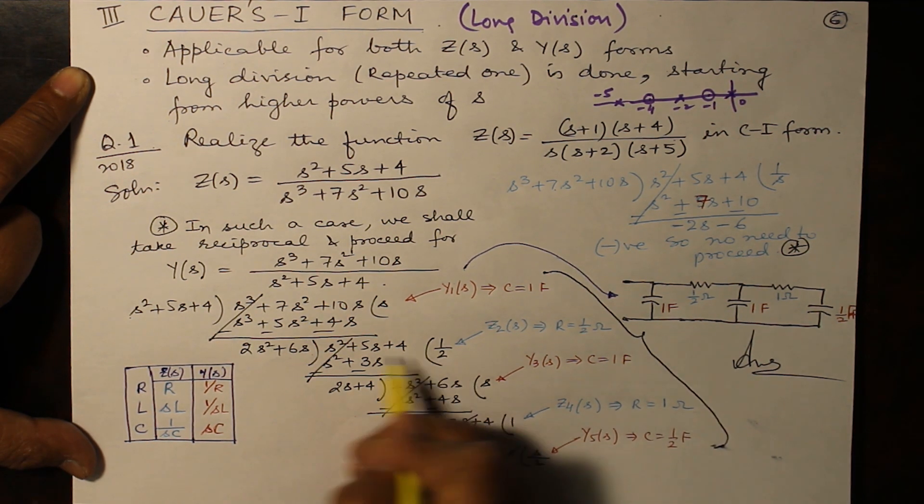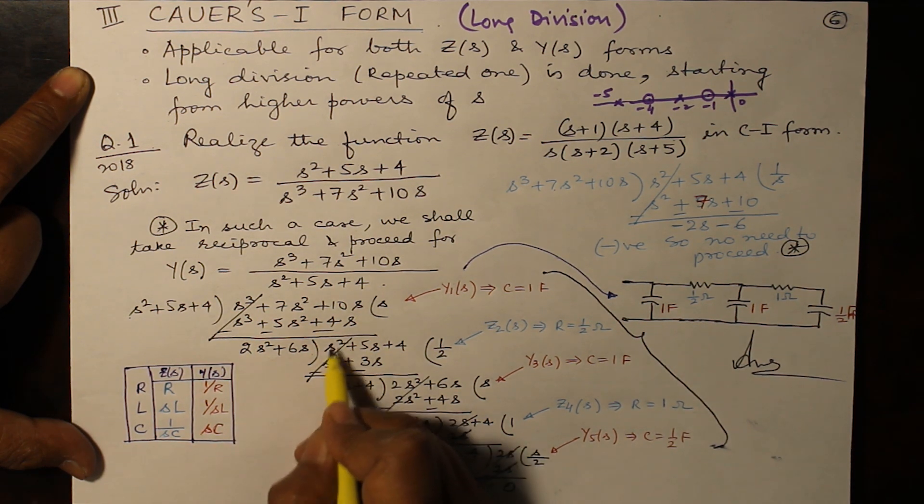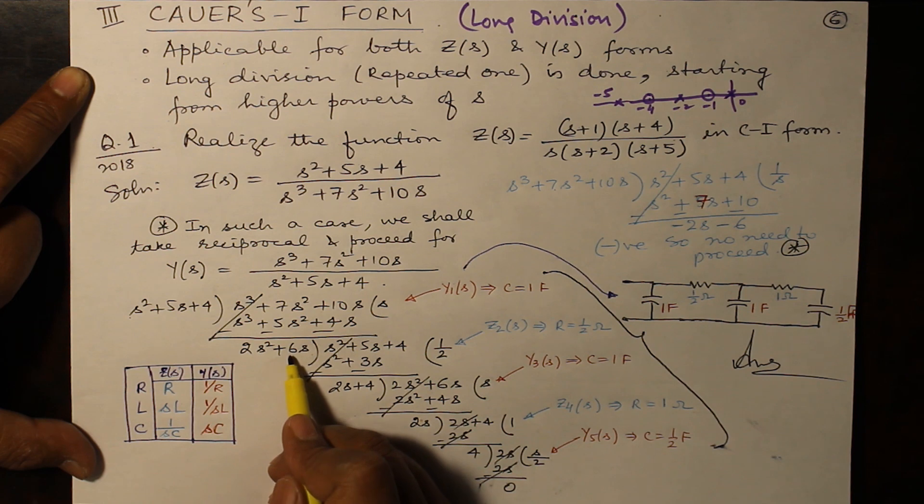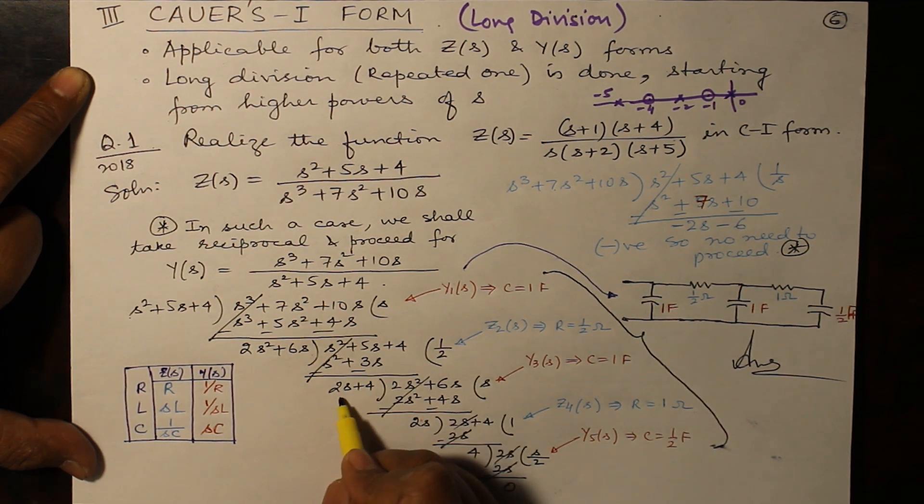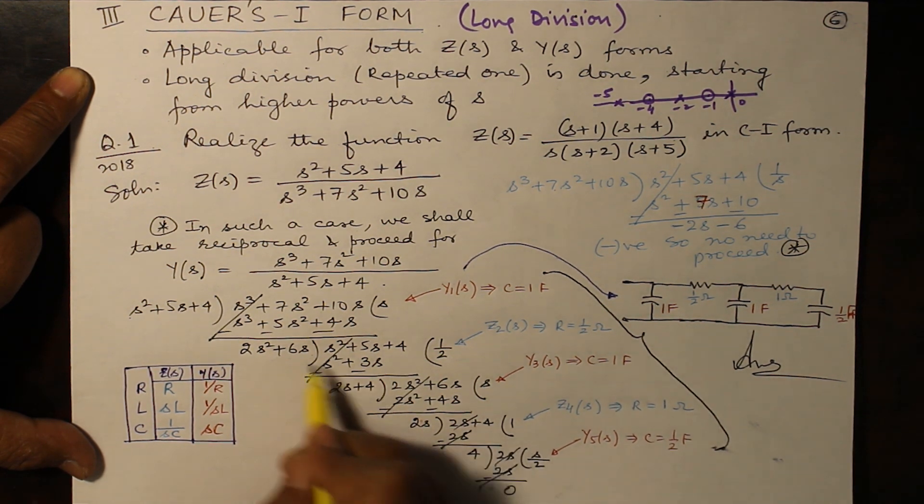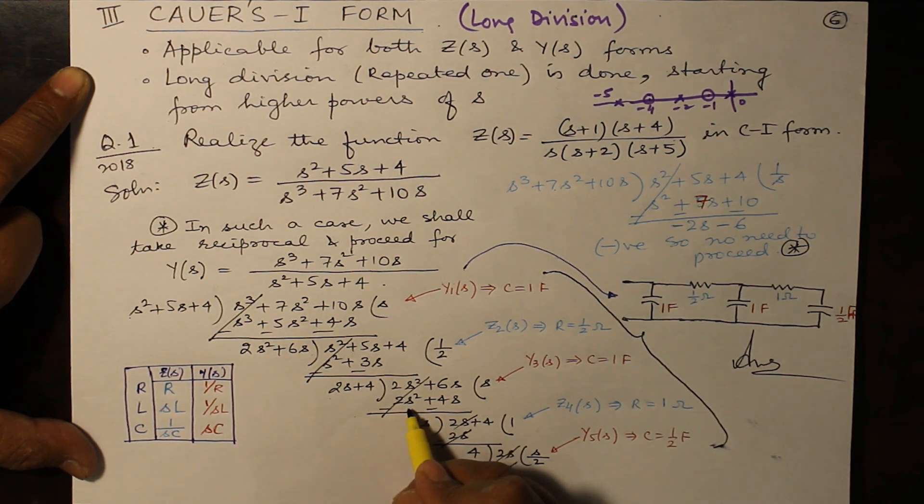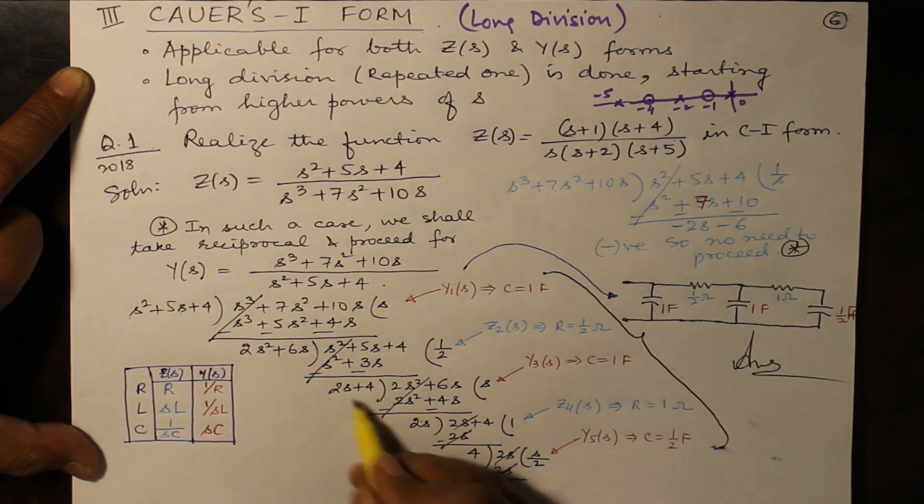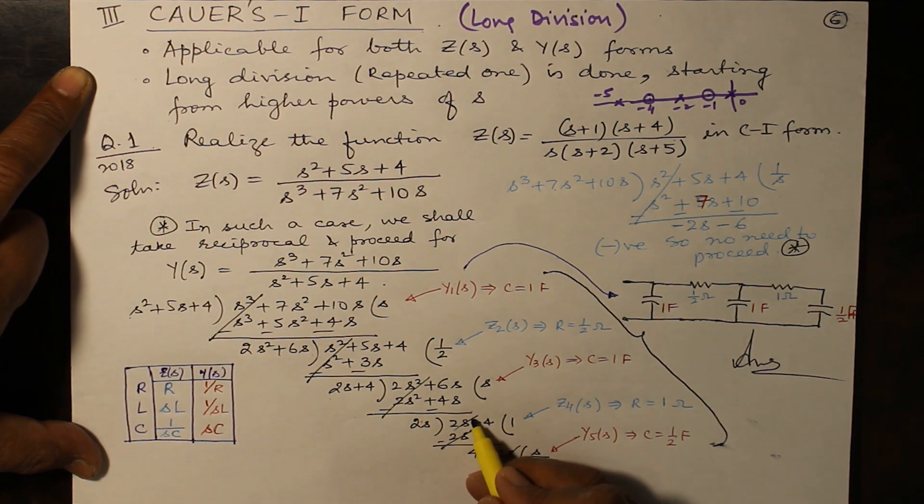So what is to be multiplied to 2s² so that it becomes s²? It is half. 6s into half gives you 3s, so 5s - 3s gives you 2s and 4 as it is. So 2s + 4 will be here and 2s² + 6s will come here. 2s into s gives you 2s² and 4 into s gives you 4s. On subtraction this gives you 2s.